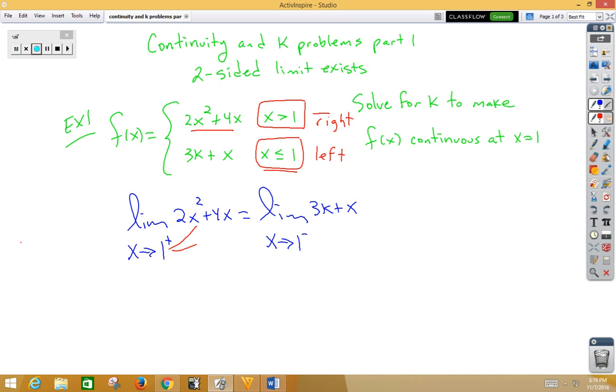If we plug in a 1 in both places here, on the left side we would get 2 plus 4. On the right side, when we plug in, we would get 3k plus 1.